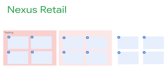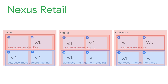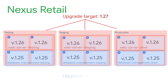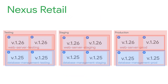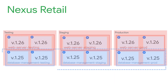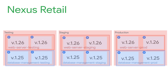Now let's look at another company. They've organized their GKE clusters into fleets and scopes. They have their clusters on two different versions in two scopes, and they want different upgrade targets, so they've enrolled the clusters in two different release channels — the web server team's clusters in the regular release channel, and the database management team's clusters in the stable release channel. Nexus Retail wants upgrades to roll out in a certain order between their scopes, so they create rollout sequences.